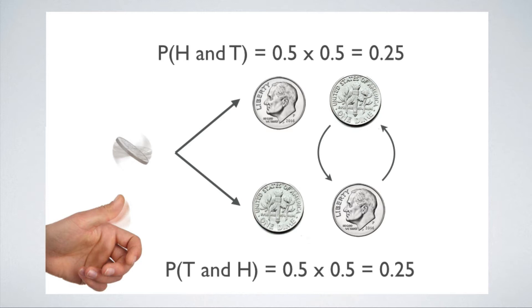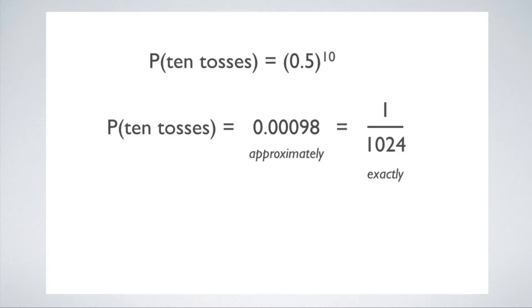So for any sequence of 10 tosses, the probability of that sequence occurring is this: 0.5 times 0.5, 10 times, which is just under 1 in 1,000. It's 1 in 1,024, exactly.